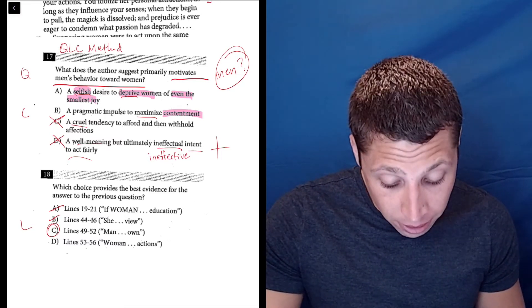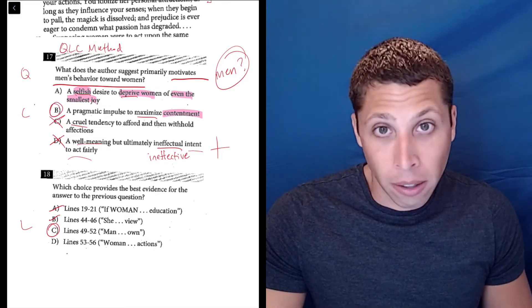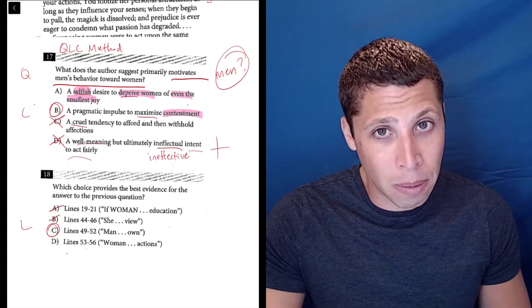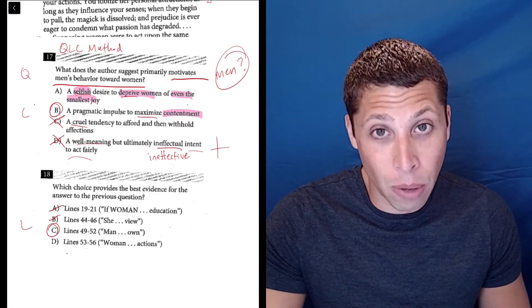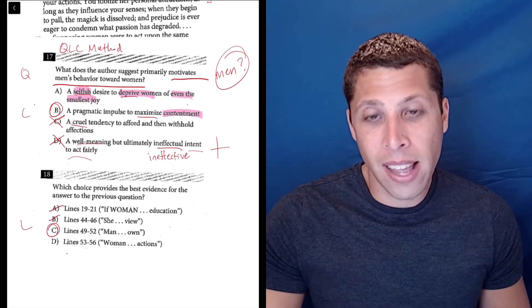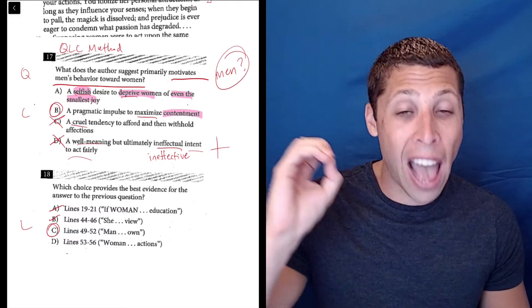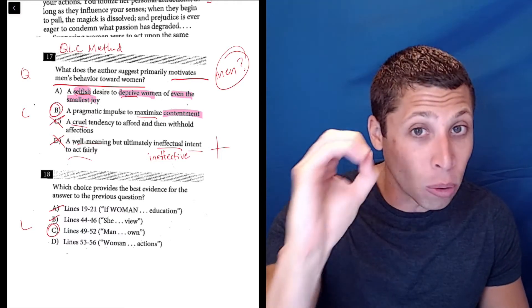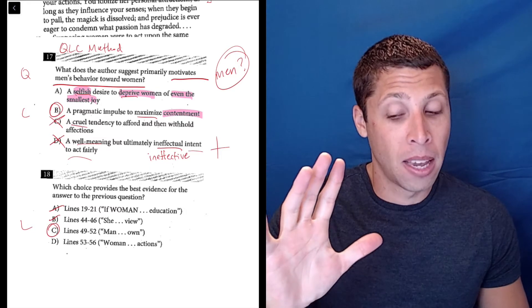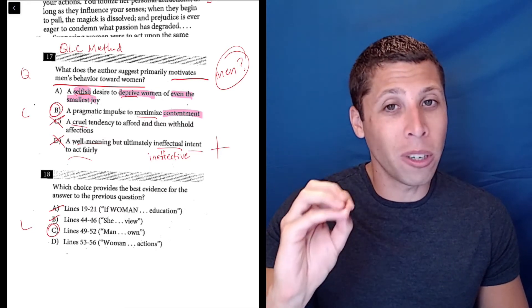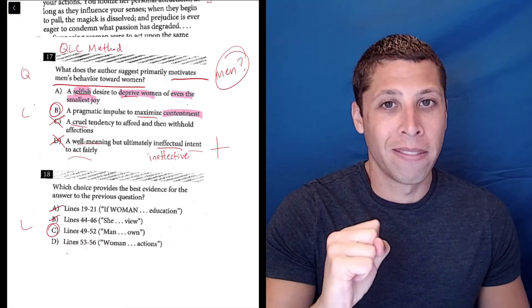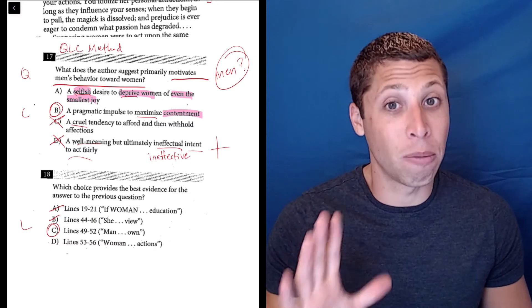Between A and B, honestly, B is weaker. I know it has some strong words, like maximizing contentment, but it's a little bit better than selfish, depriving women of even the smallest joy. Mostly because that choice A, what that would mean is that the lines are saying that men want women to have absolutely zero, without exception, zero happiness. That's a really big claim, and I know these are hard words here, but I feel like if that were what they were saying, I would know that. That's such a big thing for them to say. I just feel like that would be more obvious.